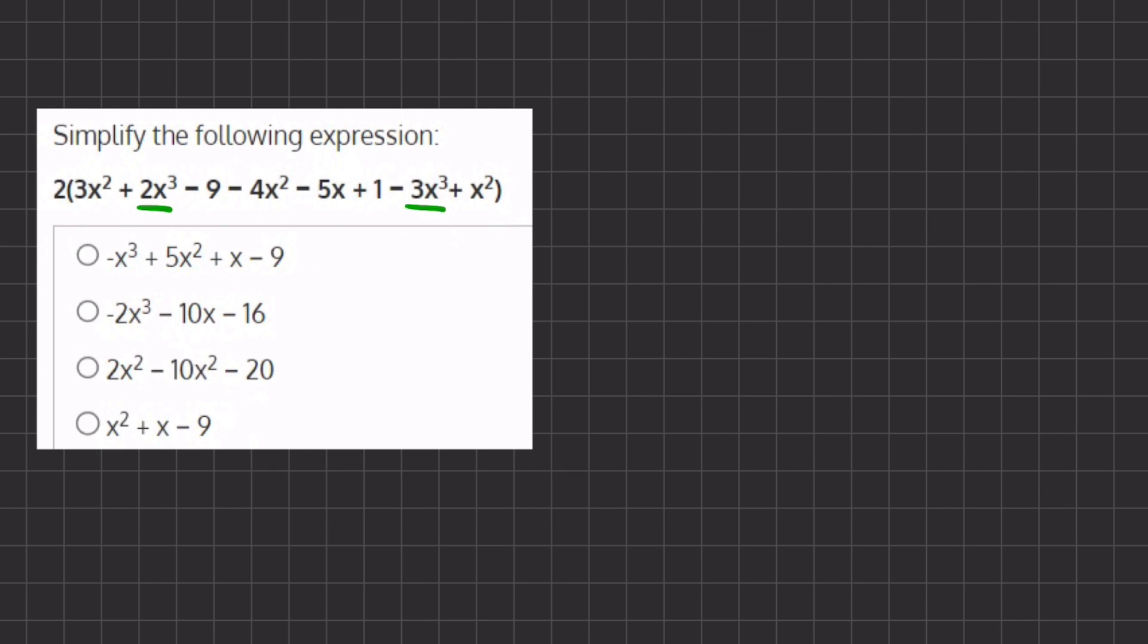So our first like term will be 2x to the power of 3 and -3x to the power of 3. And when we simplify them, when we combine the like terms, we get, let's write our full expression, we'll open our parentheses,